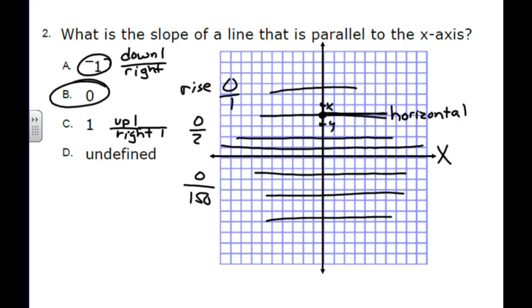Now, let's talk about what line has an undefined slope, because that could come into play too. Lines that have undefined slope are lines that are vertical. Lines that are vertical have an undefined slope.